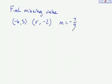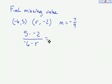So if I want to find the missing value, use what I know. I know that the two points have a slope of negative 7 ninths. So if I subtract the y values and I subtract the x values, it should equal my slope of negative 7 ninths.